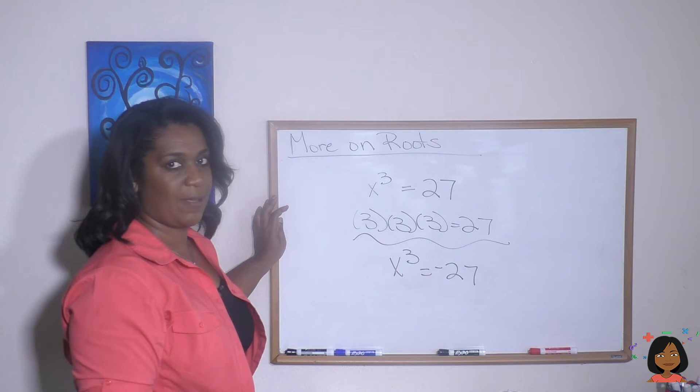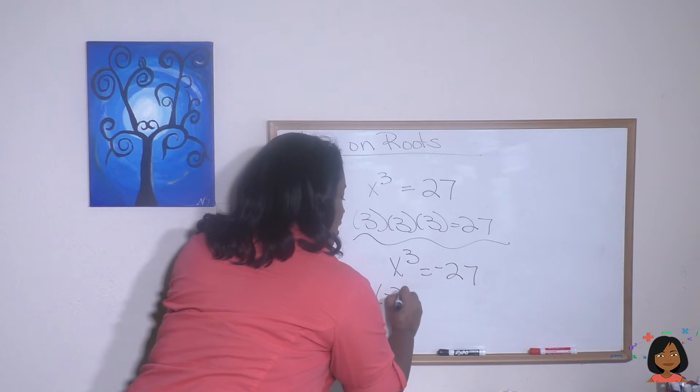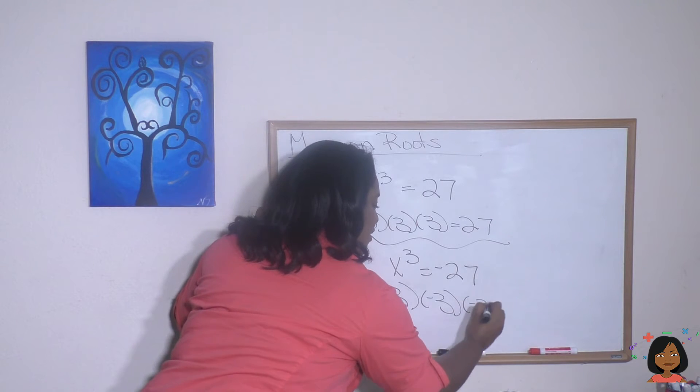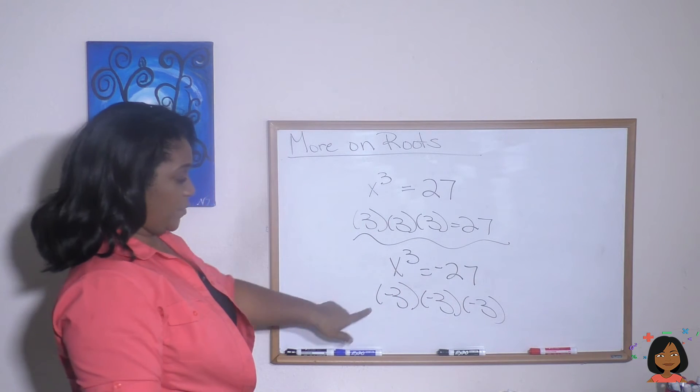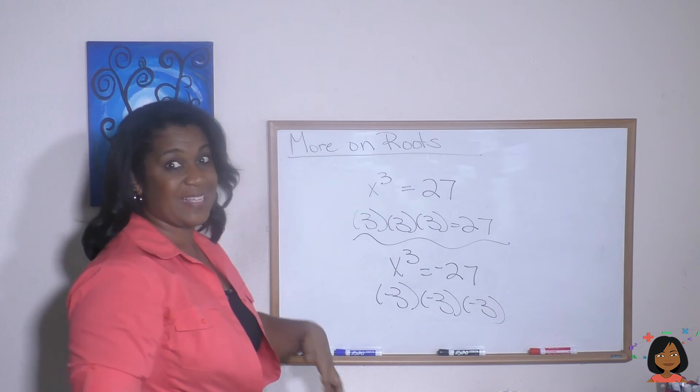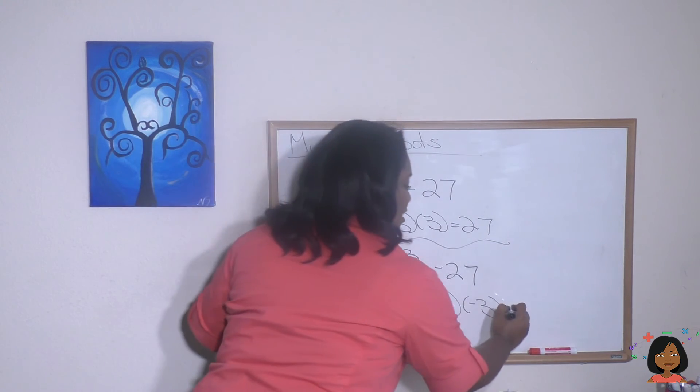Aha! Think about it. The answer would be negative 3 times a negative 3 times a negative 3. Negative 3 times negative 3 is a positive 9, positive 9 times a negative 3 is a negative 27.